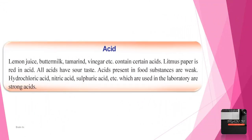Acid: Lemon juice, buttermilk, tamarind, vinegar, etc. contain certain acids. Litmus paper turns red in acid. All acids have a sour taste. Acids present in food substances are weak. Hydrochloric acid, nitric acid, and sulfuric acid, which are used in the laboratory, are strong acids.